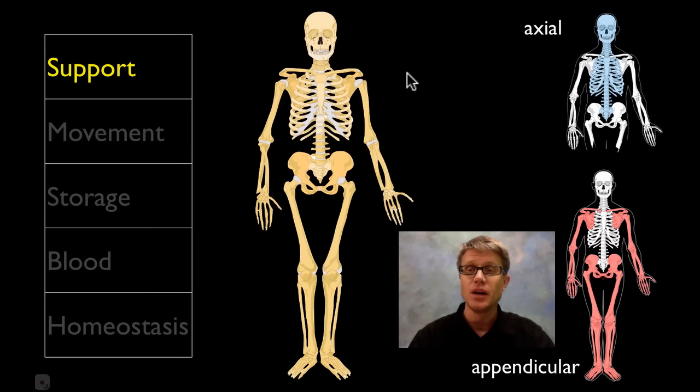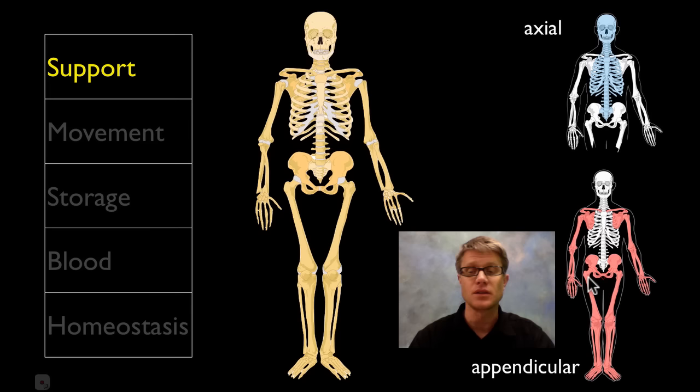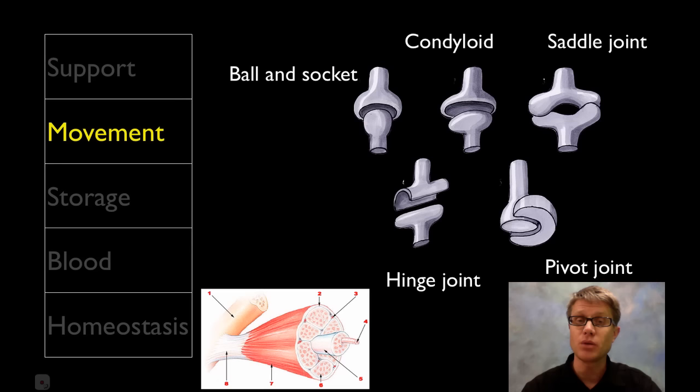Our skeleton is broken down into two different parts. We have the axial skeleton, which is made up of the skull, the vertebral column, and the ribs — it's really protecting the central nervous system and a lot of these organs. Then we have the appendicular skeleton, which is made up of everything pretty much out past these joints: your hip, your shoulder blade, and your arms and legs. The function of the appendicular skeleton is locomotion.